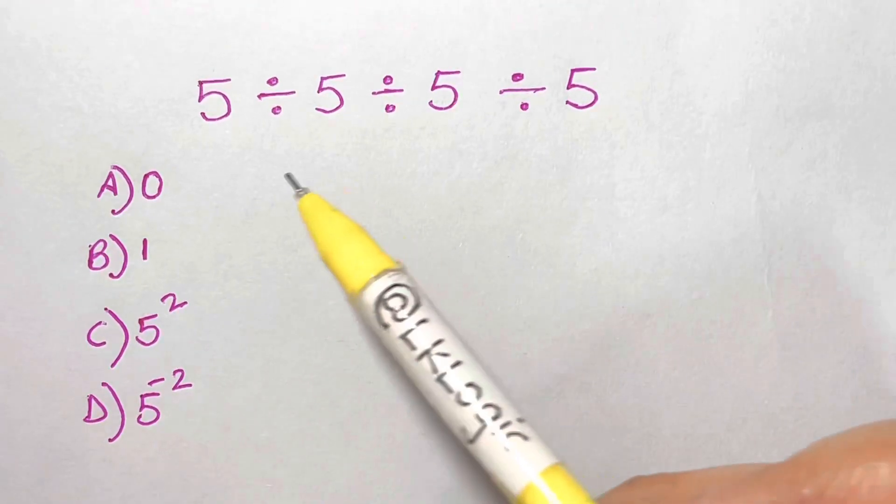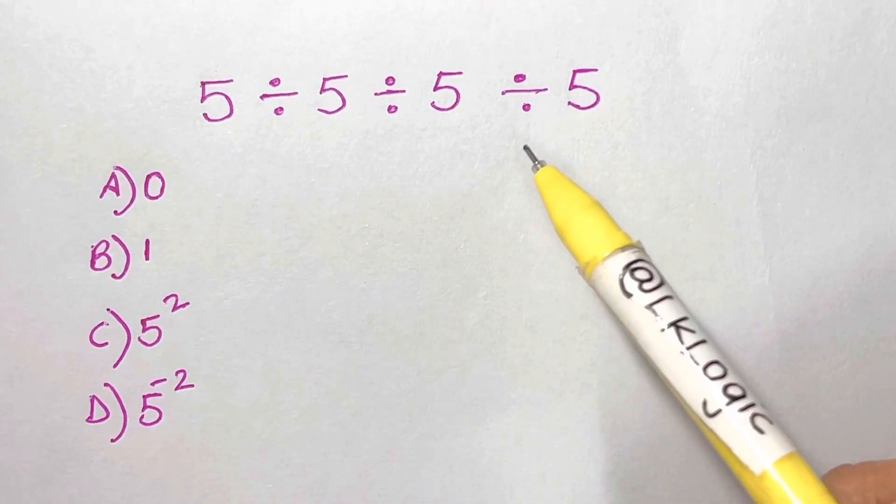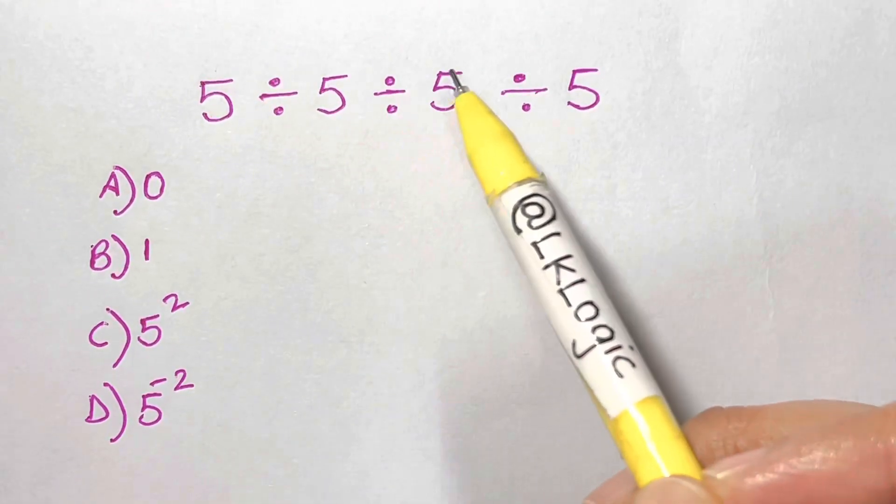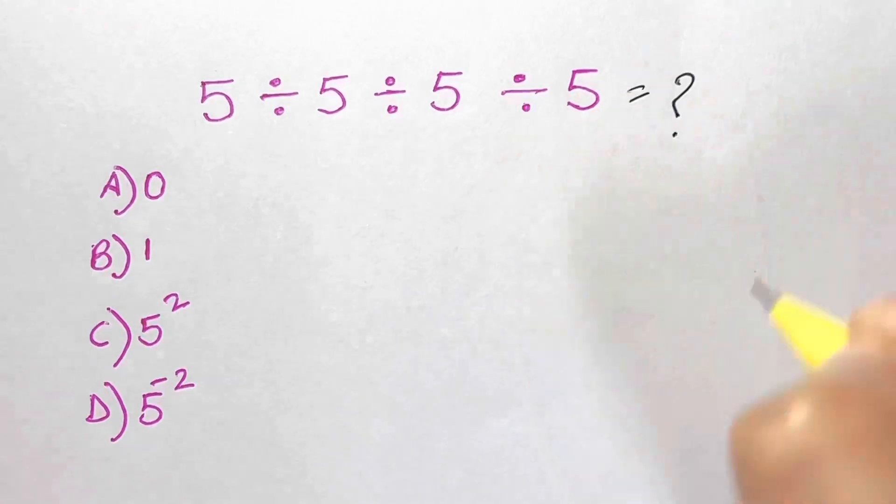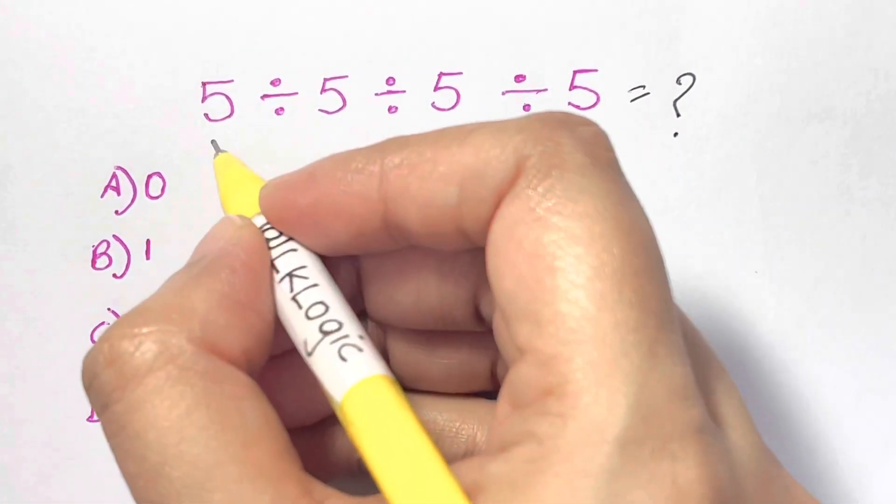Hi everyone, I'm back with another Math Olympiad question which is really really nice. 5 divided by 5 divided by 5 divided by 5 equals what? So let us find out. You have four choices, let's start with this.